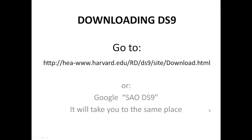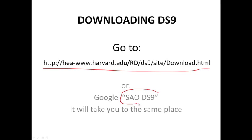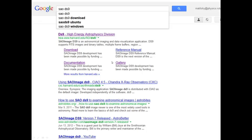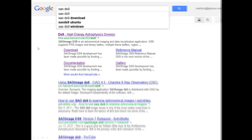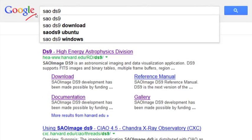All you have to do is go to this website, and if you don't want to take the whole thing down by hand, probably the easier thing to do is just go into Google and enter SAO DS9, and the search will take you to the same place. In fact, this is the screen that you're going to see if you Google SAO DS9, and you're going to head to the download page.